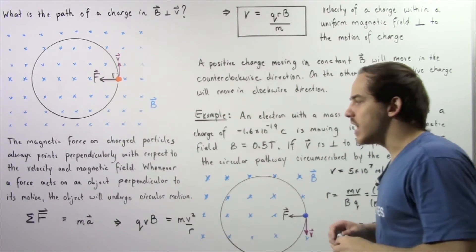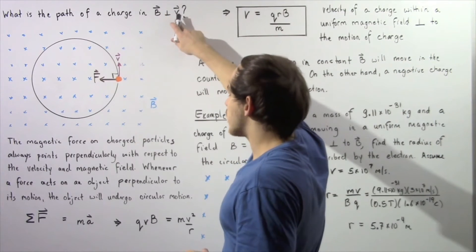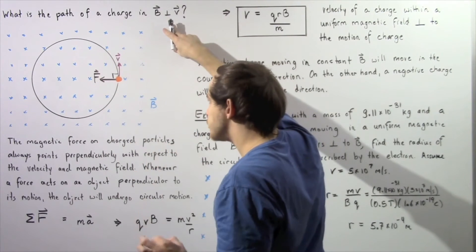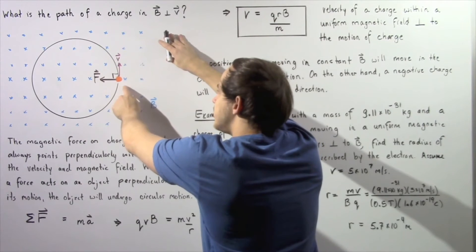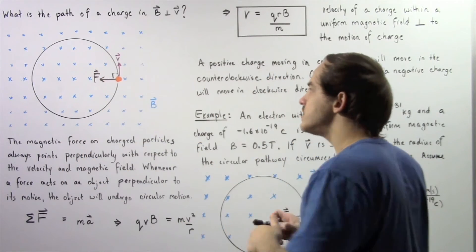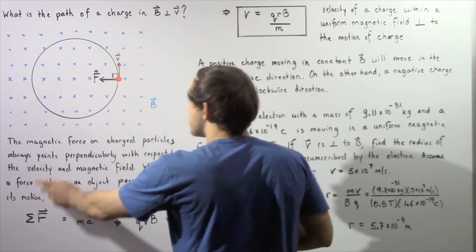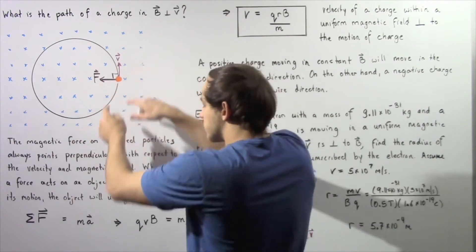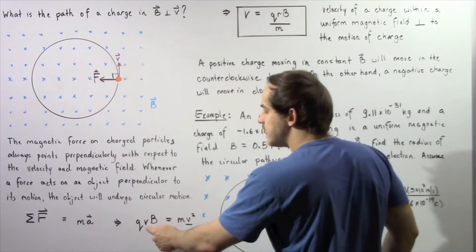Whenever a force acts on an object perpendicular to the motion of the object, and if our magnetic field is perpendicular to our velocity, this magnetic force will create centripetal acceleration. That means the speed of this particle will remain the same, but the velocity will continually change because the direction of the velocity vector will continually change. By Newton's second law of motion, the sum of the forces acting on our charged particle is equal to the mass multiplied by its acceleration. The force acting on this particle is a magnetic force.